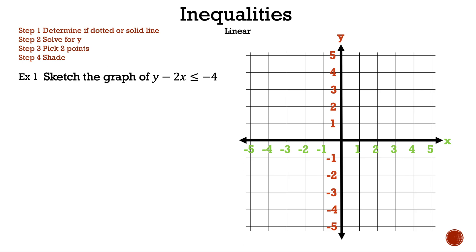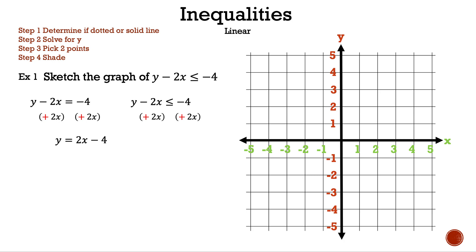Well, how do we solve for an inequality? Let's write down an equation and inequality with the same terms to find out. Let's start with the equation. We could graph from here by finding the x and y intercepts, but let's solve for y so we can see the slope and the y-intercept easier. The first step is to add 2x to both sides, so we get y is equal to 2x minus 4. Now solving for y with the inequality: we also add 2x to both sides, so we get y is less than or equal to 2x minus 4.